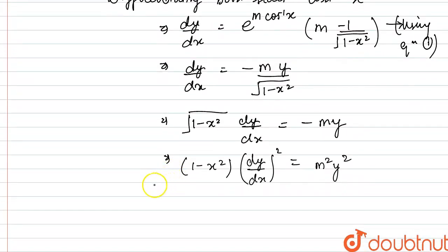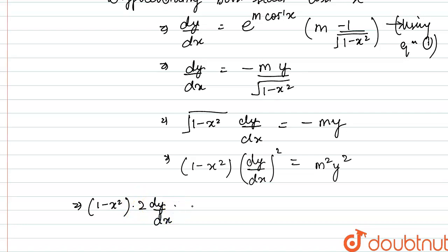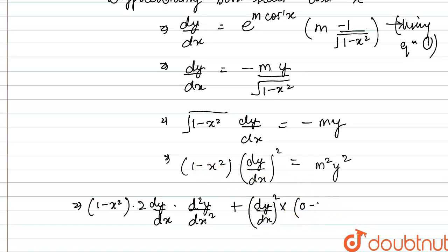We differentiate this equation again using the product rule. Keeping 1 minus x square as is, differentiation of (dy/dx)² gives 2·(dy/dx)·(d²y/dx²), plus (dy/dx)² times the differentiation of (1 minus x²) which gives minus 2x. This equals m² times 2y·(dy/dx).